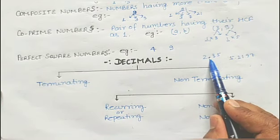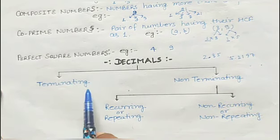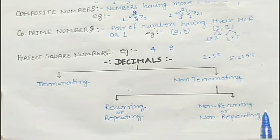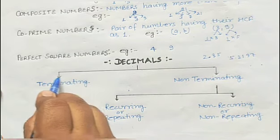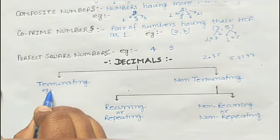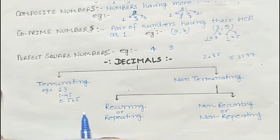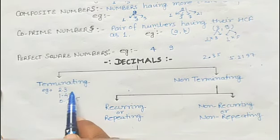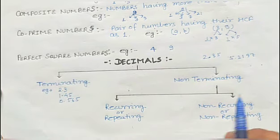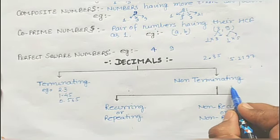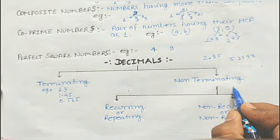These kinds of numbers which are having decimal points are known as decimals. Decimals can be divided into two parts: terminating and non-terminating. Those decimals which are getting terminated after few places of decimal are known as terminating decimals. Examples: 2.3, 1.45, 0.565 — these numbers are getting terminated after few places of decimal.